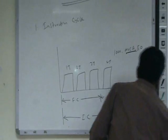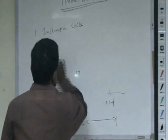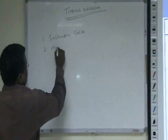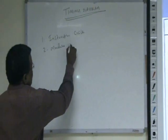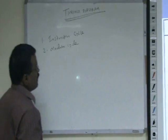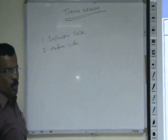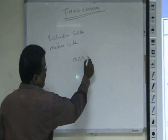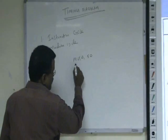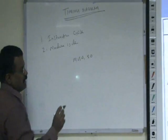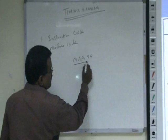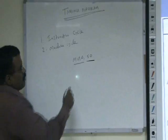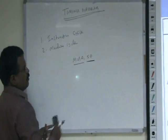Number two is machine cycle. The time taken to perform one operation is the machine cycle. For example, if you take MVI A, comma, data byte 0, this instruction consists of 2 machine cycles. The first machine cycle is the opcode fetch phase, and the second machine cycle is memory read. So the time taken to perform one operation is known as one machine cycle.